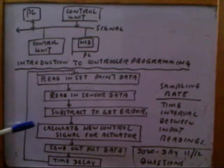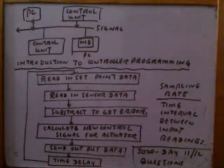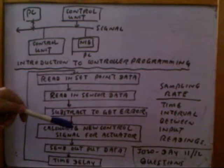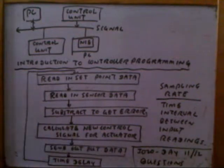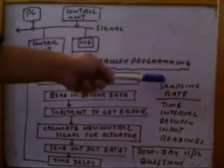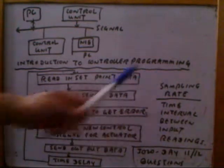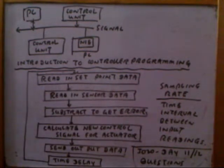Based on the error data, we calculate the new control signal for accuracy. Then this control signal is sent out to the output data. We also provide a time delay before reading the stepwise data again. The sampling rate depends on the time interval between the input readings.